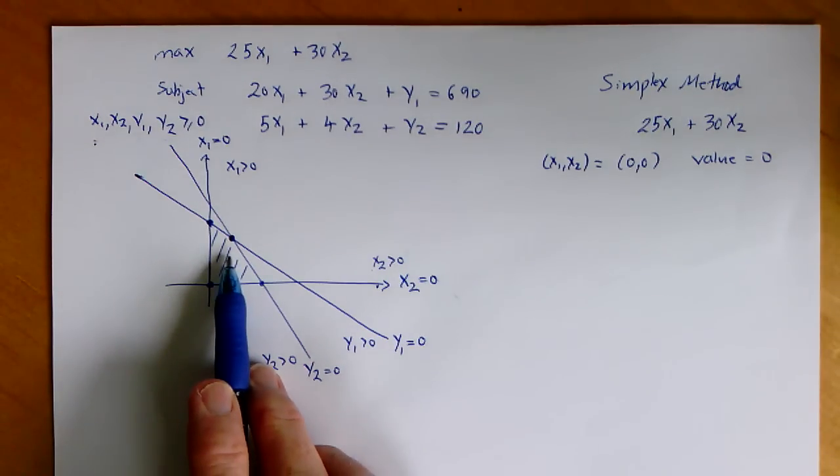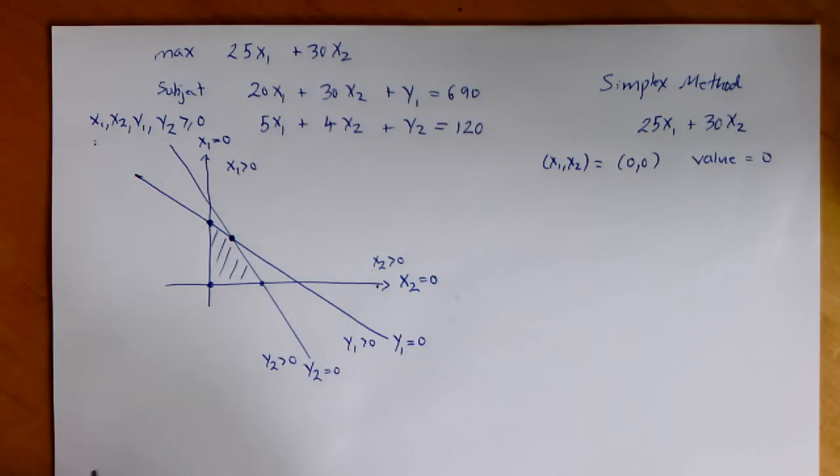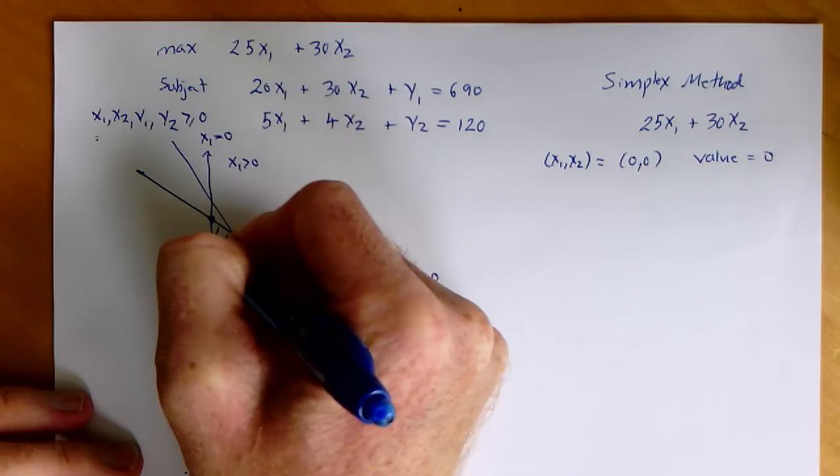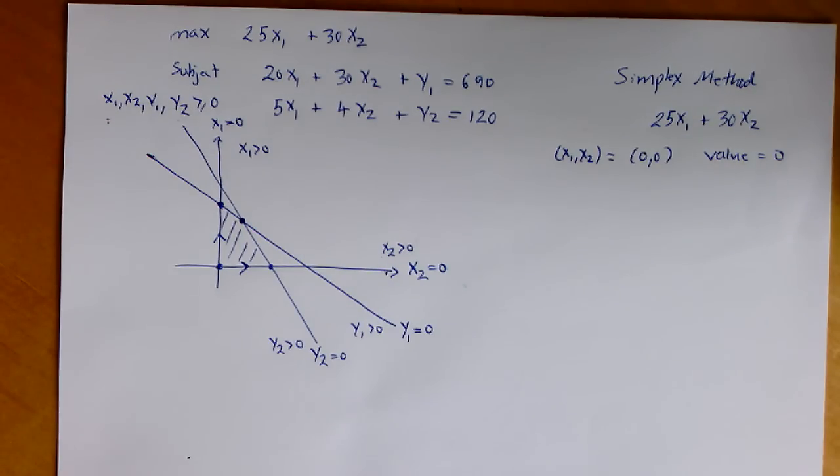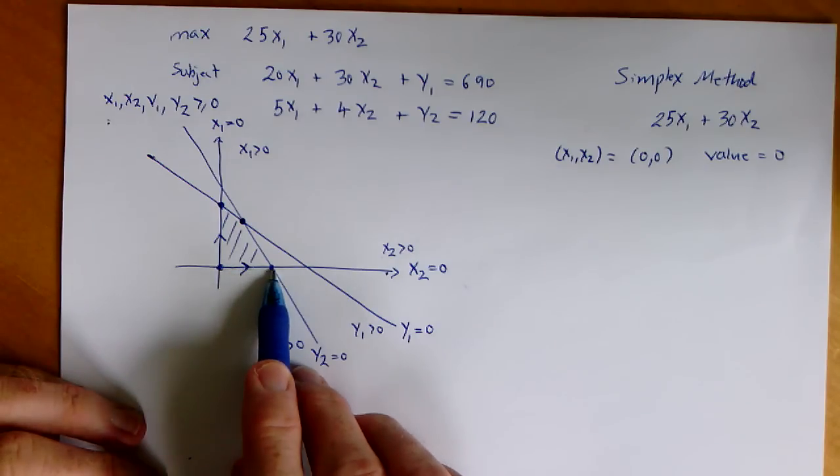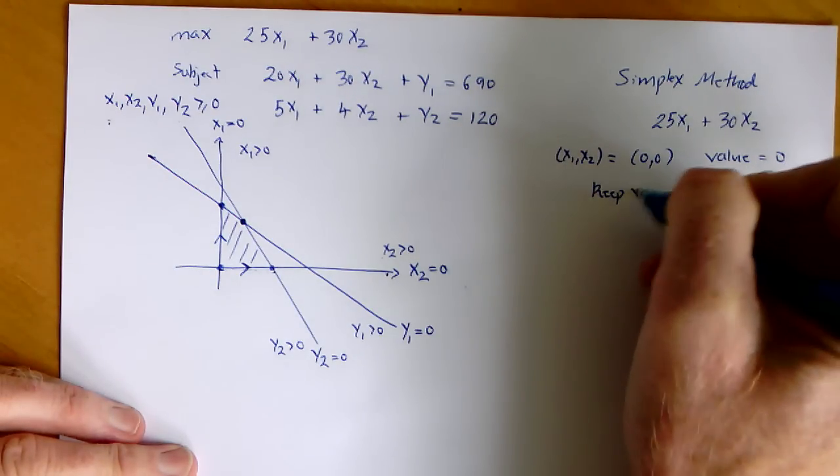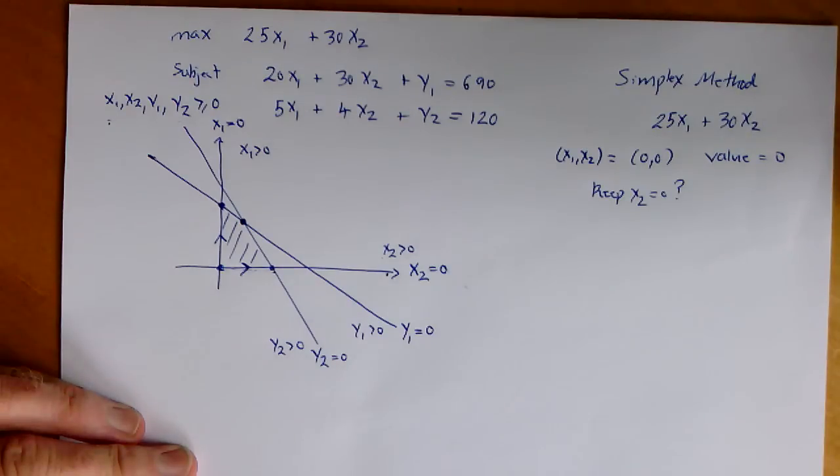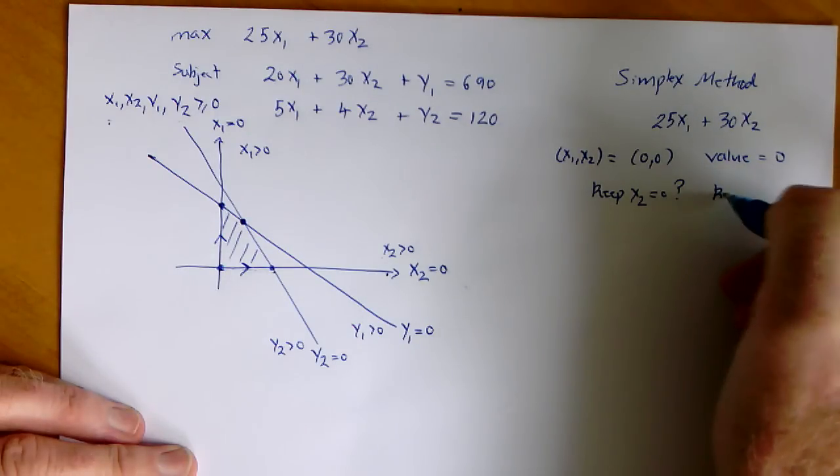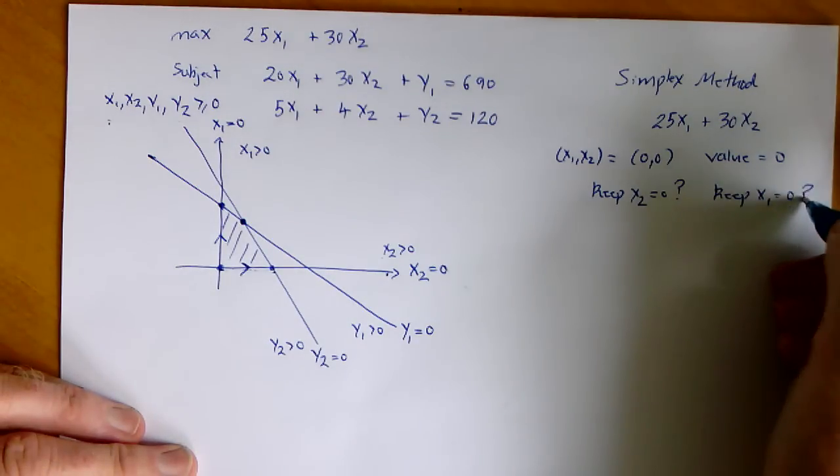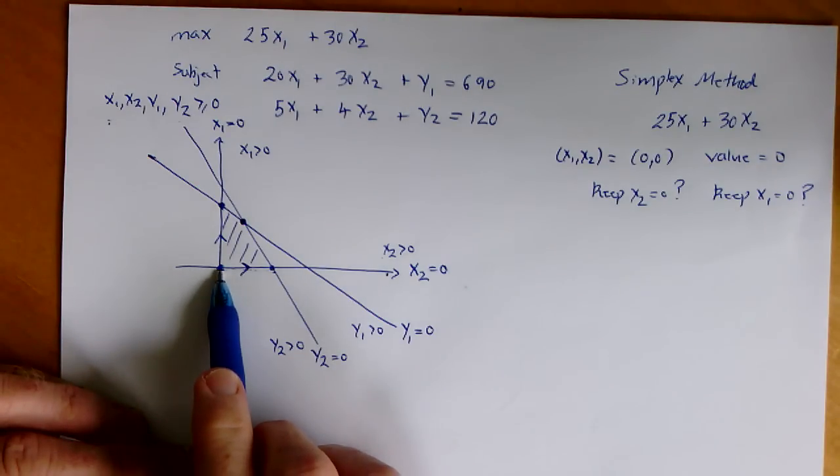And now the question is, can we do better by moving along the perimeter? We already know there's no point moving on the inside. We can just move along the perimeter. When we ask that question, can we move along the perimeter and find a larger value, there's two options. We can either go this way or that way. If we move this way, x2 equals 0. We could ask the question, should we keep x2 equal to 0? Or if we move up this way, should we keep x1 equal to 0 and increase x2?